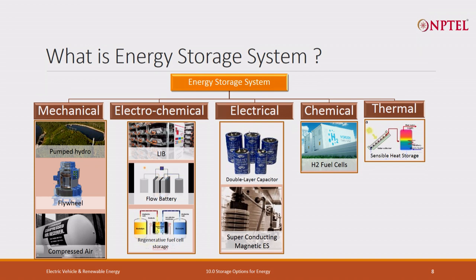So there are three to four stages of conversion and generally the efficiency of such systems is close to 60 to 65 percent. Any mechanical energy storage end-to-end energy efficiency would be around 60 to 65, maybe 70 percent — not more than that.